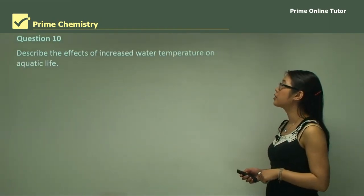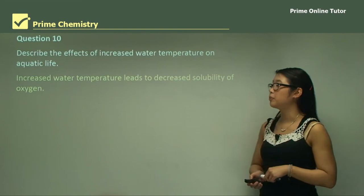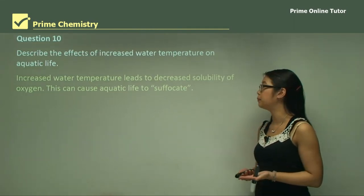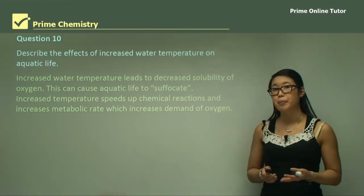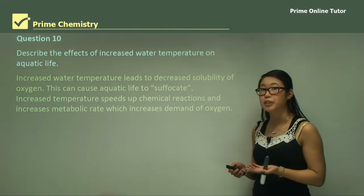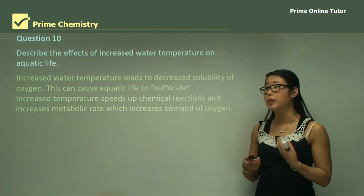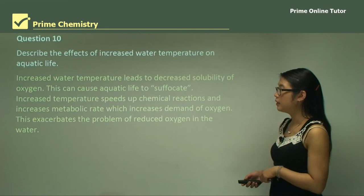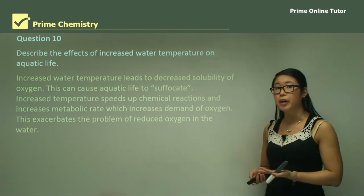Question 10: Describe the effects of increased water temperature on aquatic life. Increased water temperature leads to decreased solubility of oxygen, which can cause aquatic life to suffocate due to lack of oxygen. Increased temperature also speeds up chemical reactions in the body and increases metabolic rate, which increases oxygen demand. This exacerbates the problem of already reduced oxygen, since increased temperature decreases solubility.